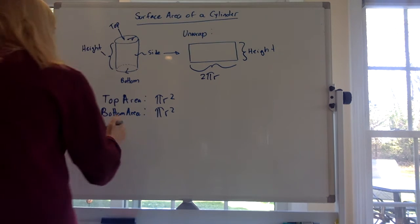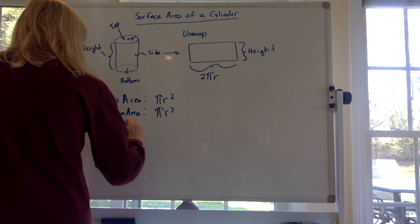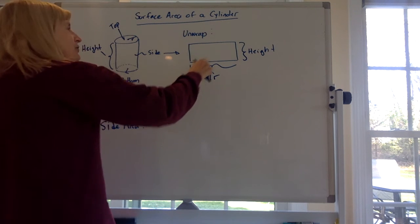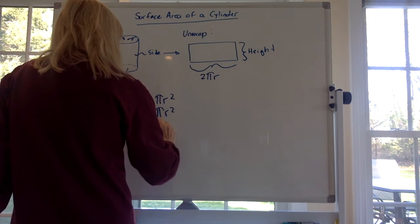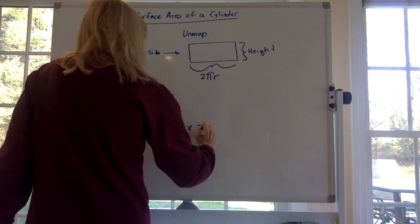And then you'd have the side area. How would you find the area of this rectangle? It's the height times 2πr.